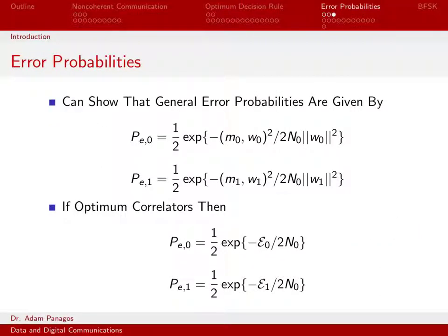What we're going to do is we are going to show that these error probabilities end up looking like this. So the conditional probability of error given signal zero was sent ends up having this form: one-half times an exponential to the negative dot product between M0 and W0 squared divided by 2 and not the norm of W squared. And then PE1 looks very similar.